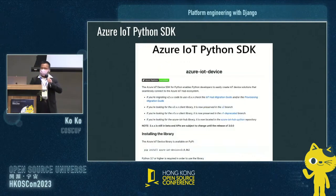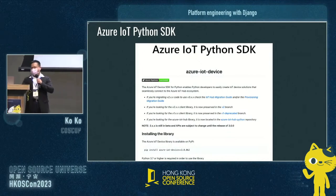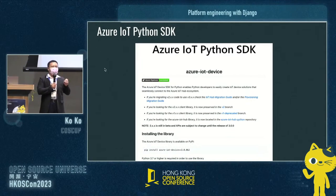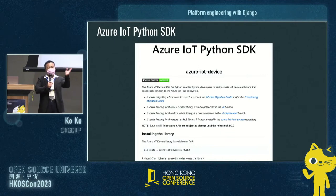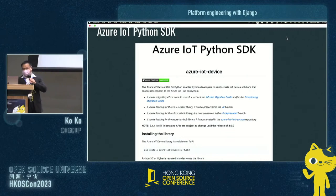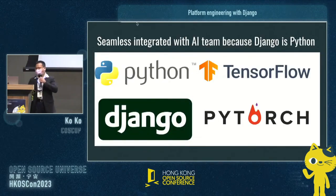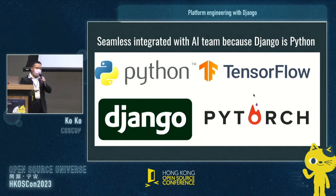We are actually an IoT company, using Azure edge computing to solve our customers' problems. Azure IoT is great — you just install the Azure IoT runtime on your bare metal server and you're ready. It provides a Python SDK as well, so you can integrate it into your Django website and click a button to manipulate your Azure server. Most importantly, it can integrate with the AI team because Django is Python, and the AI team uses TensorFlow or PyTorch — all typically Python — so we can integrate easily.